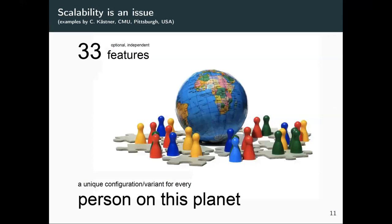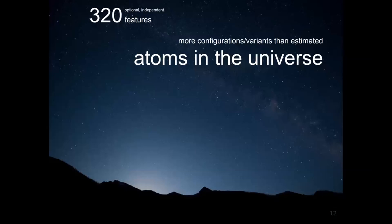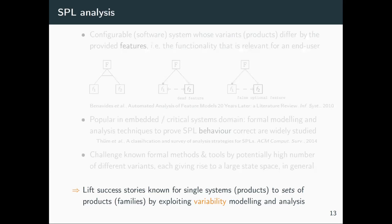Here's a favorite slide from Christian Kastner: with just 33 optional independent features, we have 2^33 valid products — a unique configuration for every person on this planet. This grows very quickly. Of course, cross-tree constraints typically limit the number of valid products, but it gives you an idea of how exponentially the state space explodes.